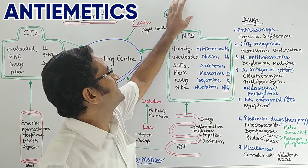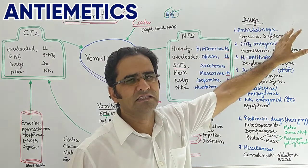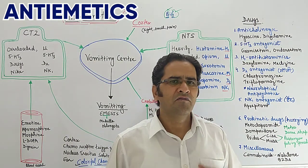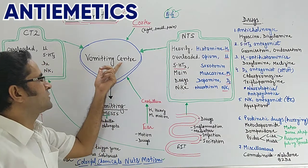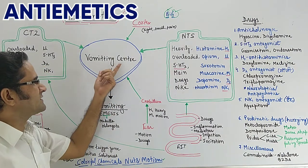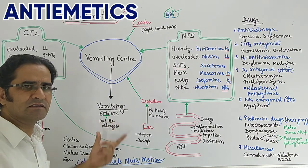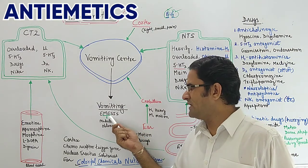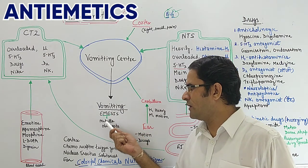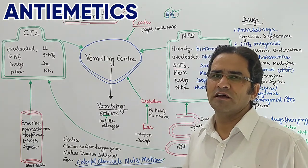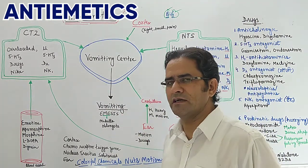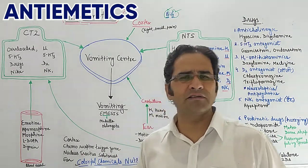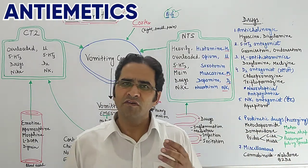The GIT part will be discussed in the next video. Today we will focus on B, meaning the brain. Whenever vomiting occurs, it is due to stimulation of the vomiting center. When the vomiting center is stimulated, vomiting occurs — emesis. The word emesis: ME stands for medulla oblongata. So the first key point is that the vomiting center is located in the medulla oblongata in the brain.